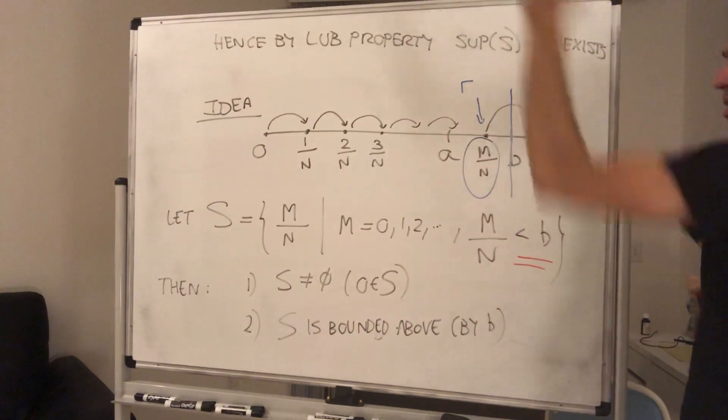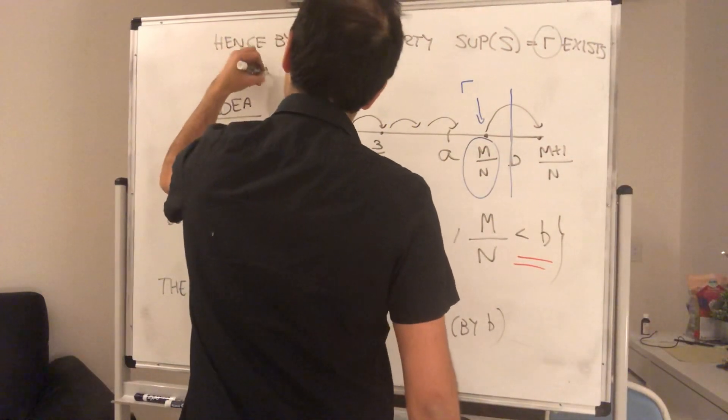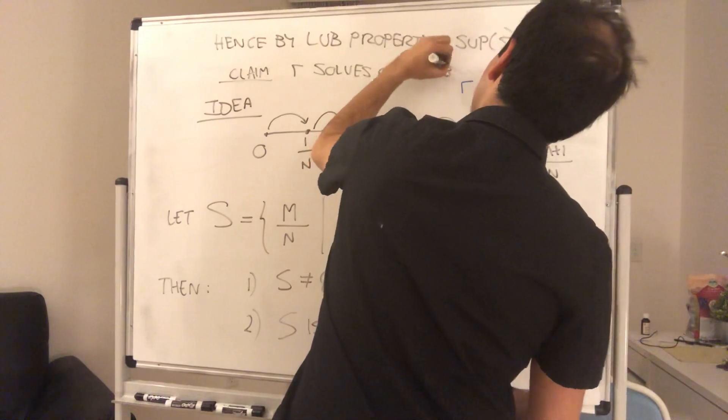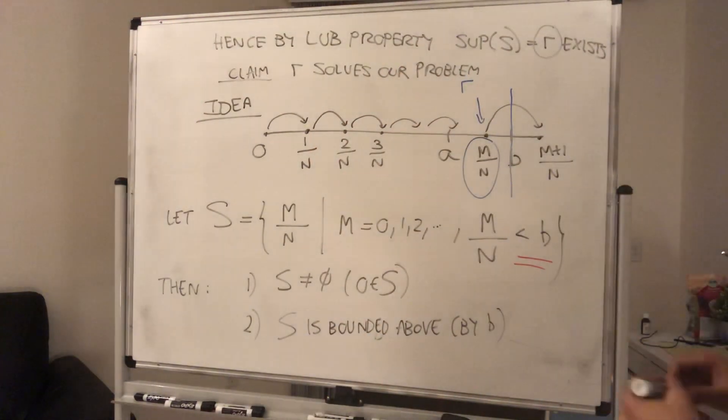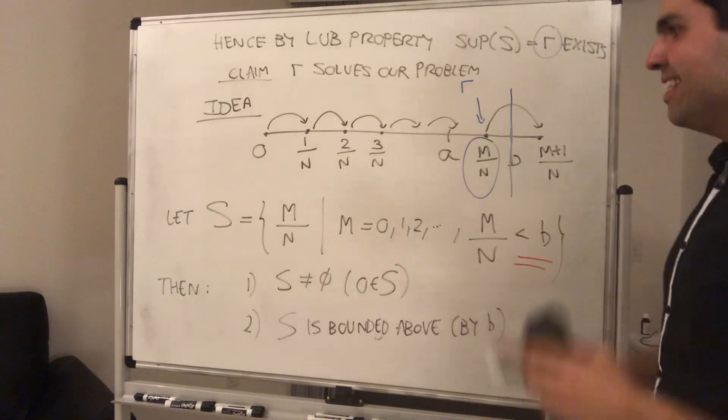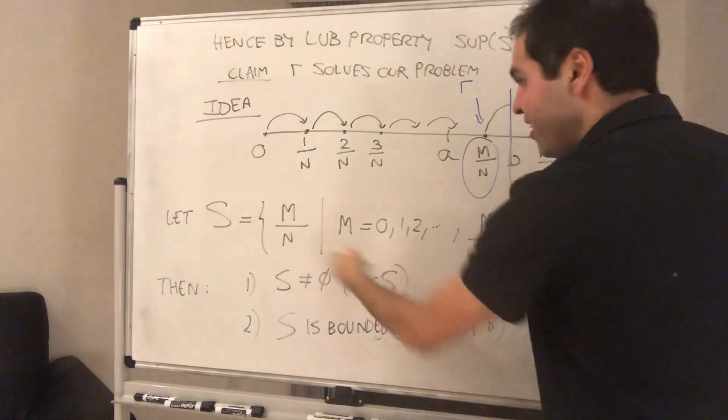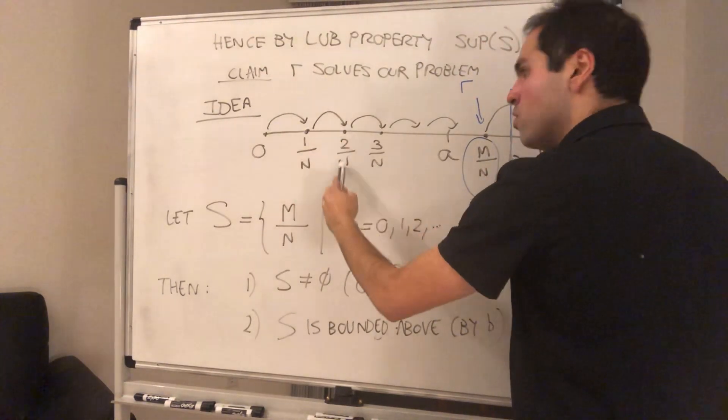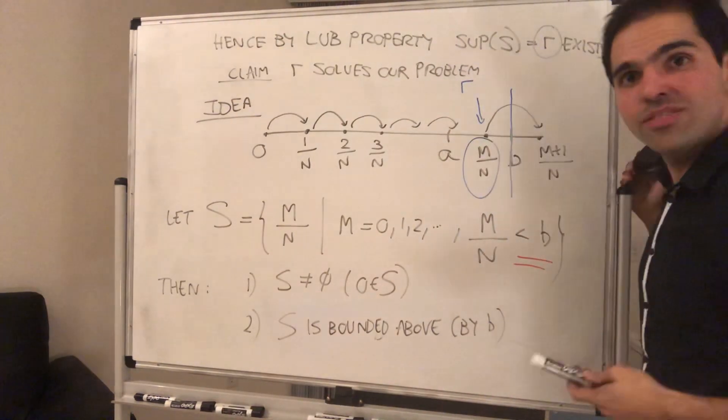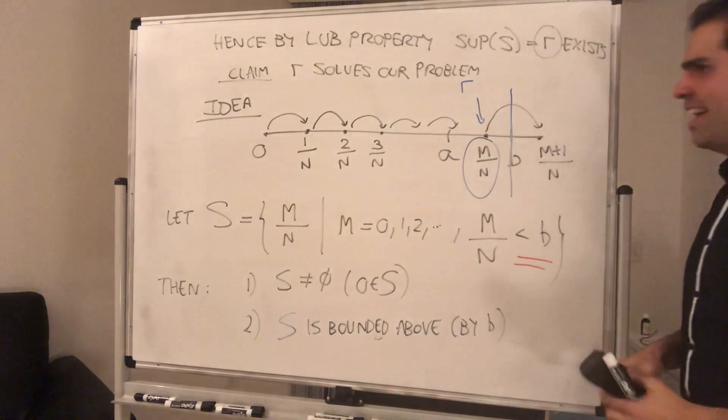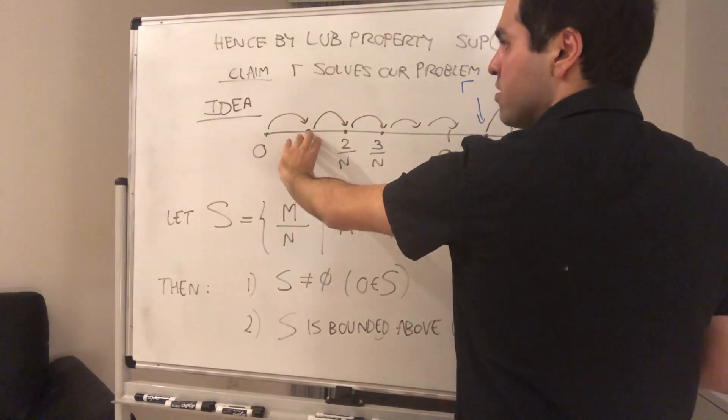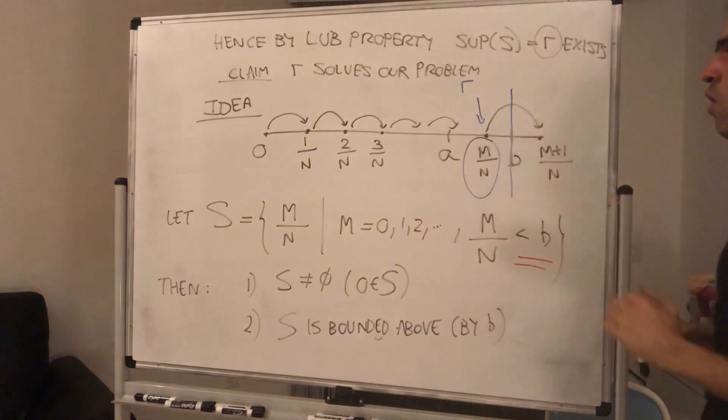And I'm claiming this r is what solves our problem. So claim r solves our problem. In other words, r is a rational number that's strictly between a and b. Here's the thing though. This is what makes the problem so amazing. It looks like S is a huge set, but actually it's not. It's finite. Because you start with 0, you add 1 over n, 2 over n, 3 over n. But this process has to stop. Otherwise, you go above b. And it turns out you can rigorously show this using the Archimedean property. So if you think of 1 over n as your currency, if you add up 1 over n enough times, you go above b.